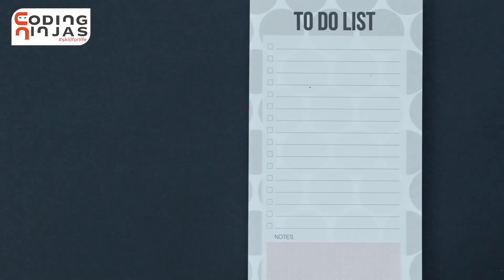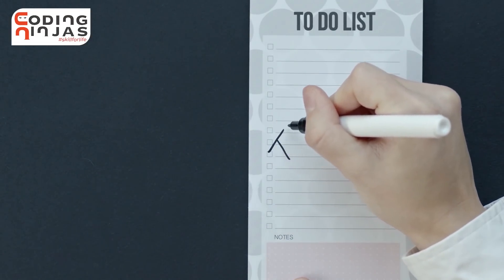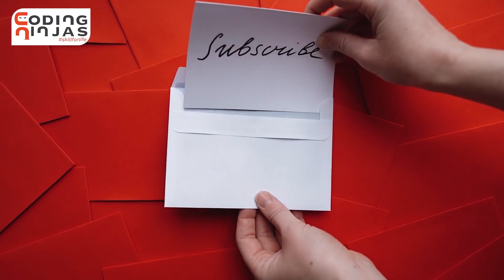First we will talk about a small framework — about what things we should consider when we are thinking about a project. Secondly, I will talk about seven different project ideas. I'll give you some examples for each, but these are categories you can think about for your own ideas. Stay till the end of the video and do subscribe to the channel.